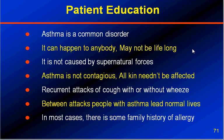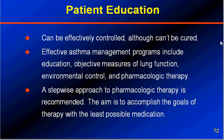What do I say to the patient? Asthma is a common disorder — it can happen to anybody and may not be lifelong. It is not caused by supernatural forces. Asthma is not contagious, and all family members need not be affected. Recurrent attacks of cough with or without wheeze could be asthma. Between attacks, people with asthma lead normal lives. In most cases there is a family history of allergy. Tell the patient it can be effectively controlled although it cannot be cured. Effective asthma management includes patient education, objective measurement of lung function using peak flow meter and spirometry, environmental control to reduce allergen exposure, and pharmacological therapy — particularly inhalation therapy. A stepwise approach to pharmacological therapy is recommended, aiming to accomplish the goals of therapy with the least possible medications and side effects.